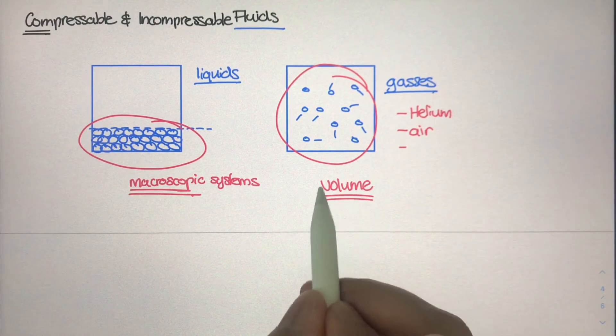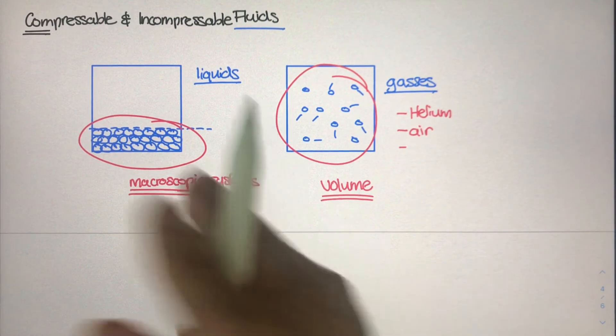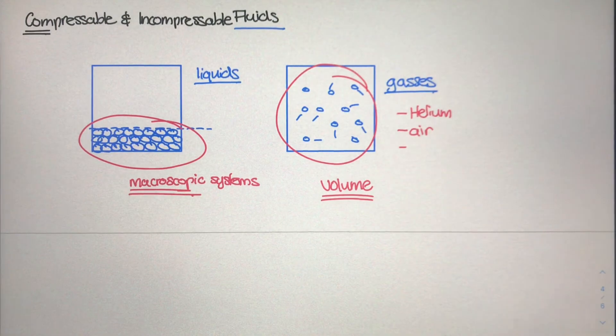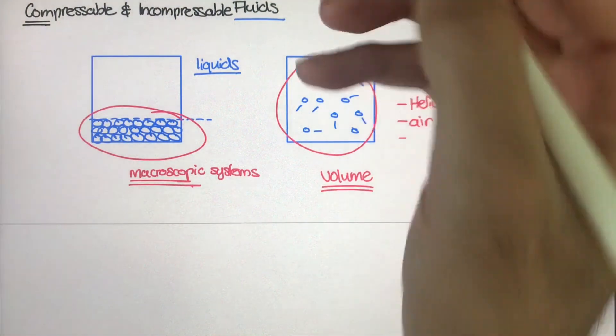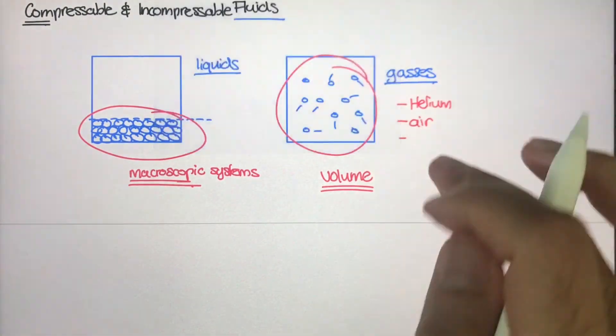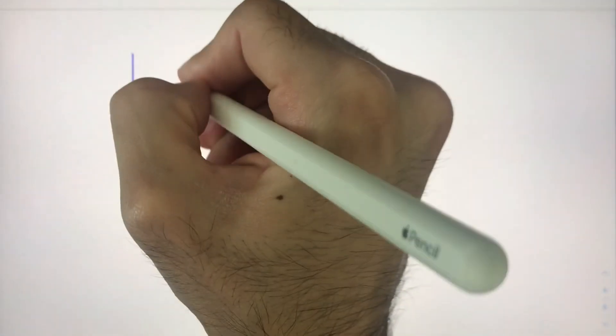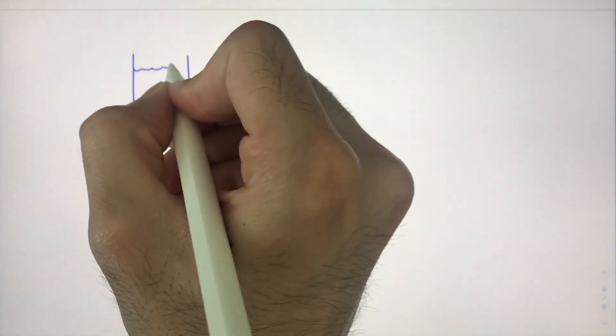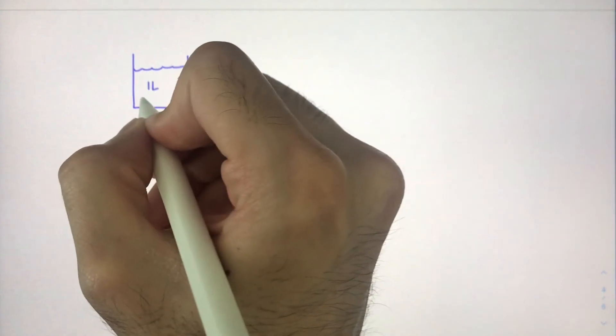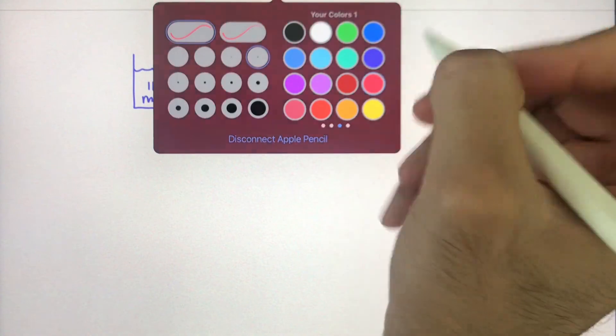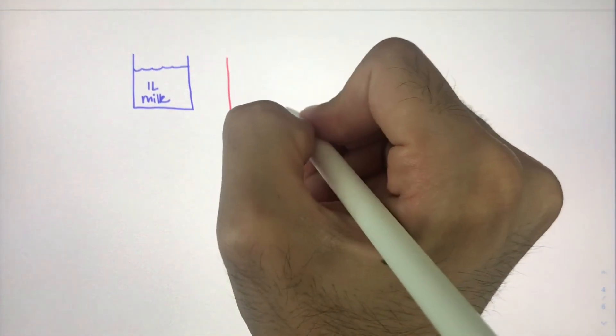But actually, let's take a closer look at volume. Volume is really the space defined in some type of a three-dimensional object or a three-dimensional shape. But how do we classify fluids using volume? Well let's take a look at an example. So let's say we had a container and this container had one liter of milk.